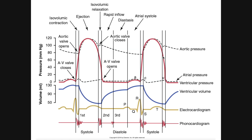The pressure continues falling in the left ventricle until it hits the atrial pressure threshold. As soon as left ventricular pressure falls beneath the atrial pressure, that triggers the AV valve to open once again — because as long as left ventricular pressure is higher than atrial pressure, the mitral valve remains closed. When the left ventricular pressure falls beneath the atrial pressure, the mitral valve opens, allowing the ventricles to fill once again. This takes us right back to where we started, and we see the left ventricular volume going back up.